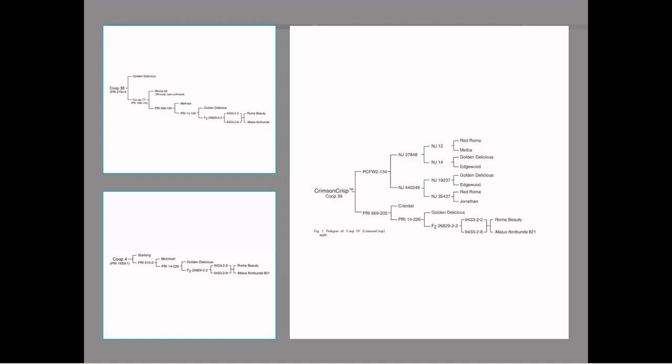The last cultivar on our hit list will be Crimson Crisp. And this is the most complex of the pedigrees, but you can basically get a sense of how it was bred from this pedigree map you see right here.